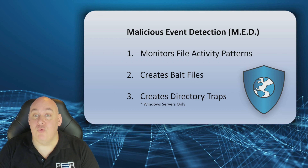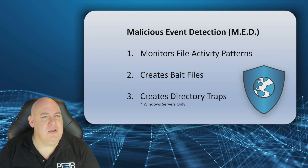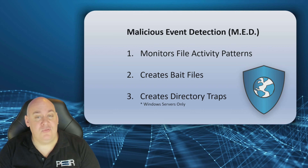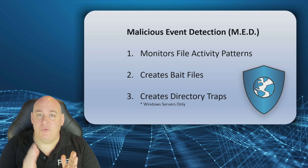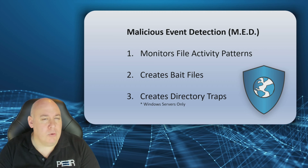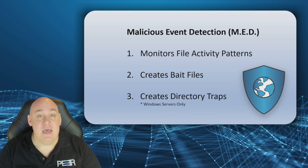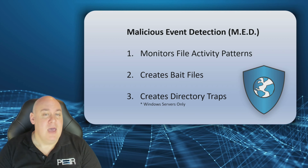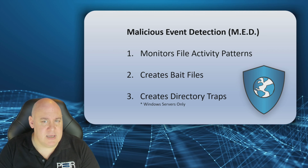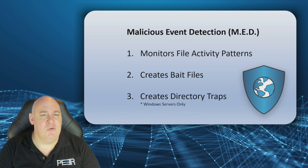Thirdly, on Windows servers, PeerGFS can establish directory traps which, like bait files, are hidden folders that users wouldn't see. These folders point back to themselves. So as a ransomware process is trawling through files and folders looking for the types of files it wants to attack or encrypt, it will get stuck in the directory trap, looping round and round within that same folder — again triggering an alert and buying Dennis and his admins time to investigate.